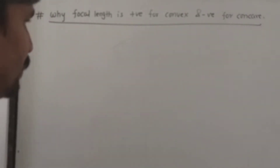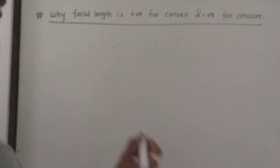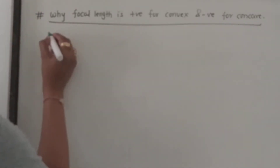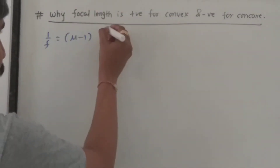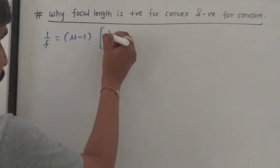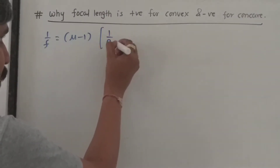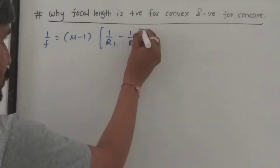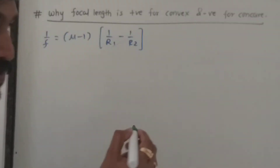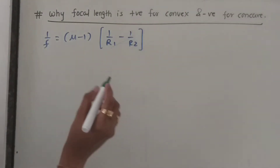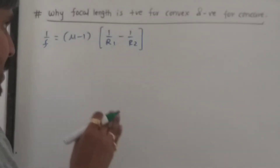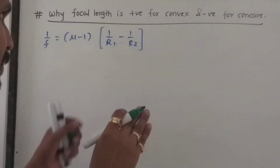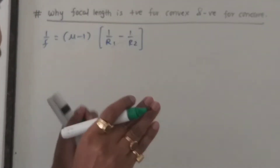We have the lens maker's formula. What is the lens maker's formula? It is: 1 by f equals mu minus 1, multiplied by the bracket 1 upon R1 minus 1 upon R2. This is your lens maker's formula. Here, f is the focal length, mu is the refractive index, and R1, R2 are the radii of curvature.